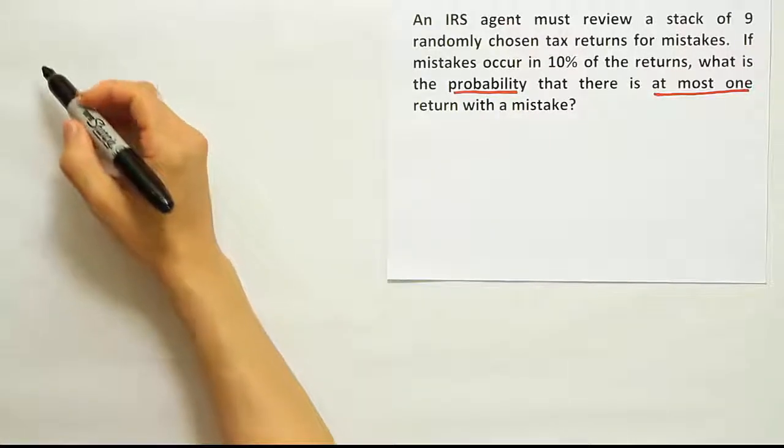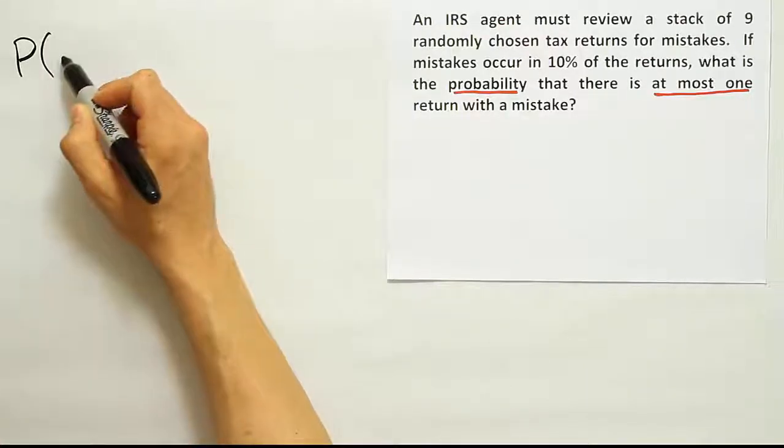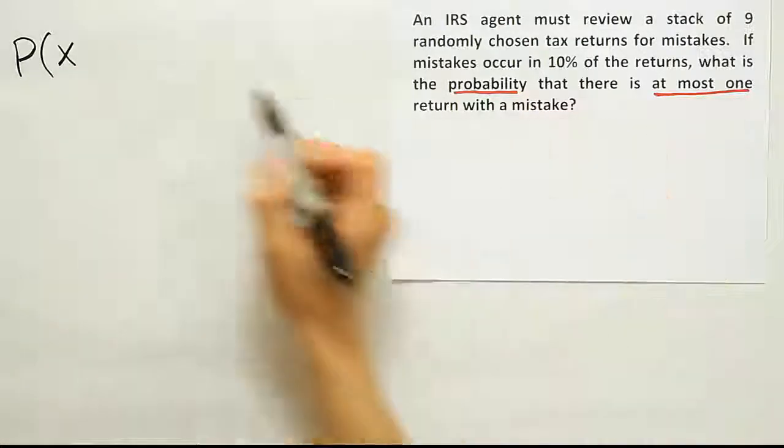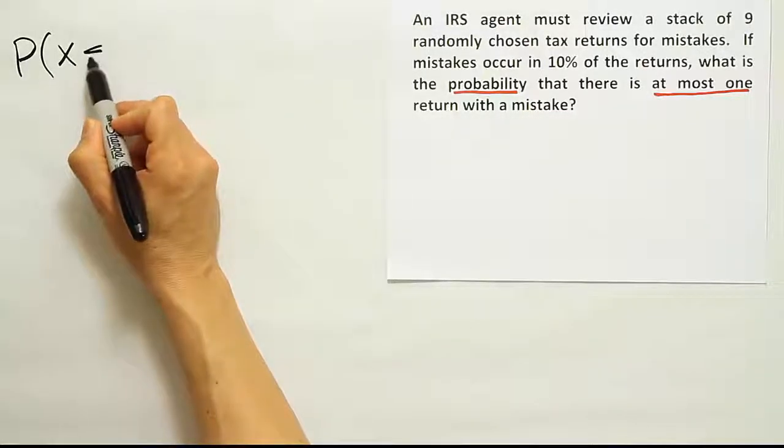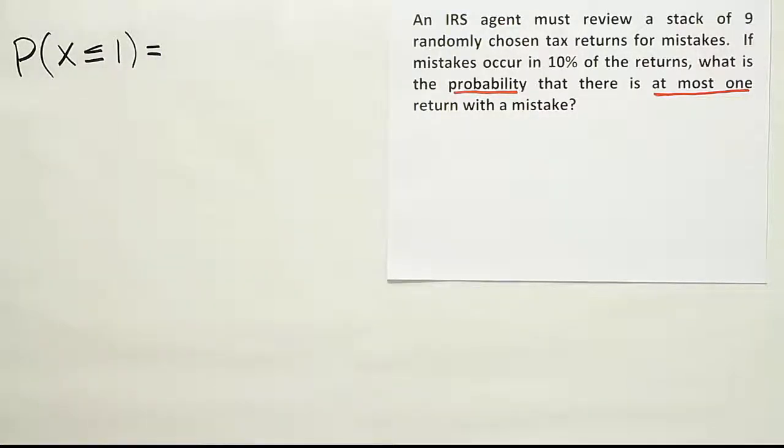So I'm going to start out with the idea that we're looking for the probability that x is—and when it says at most one, that's the same to me as less than or equal to one. Probability that at most one, that's x is less than or equal to one.